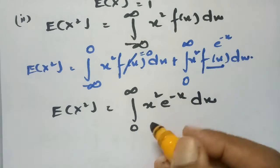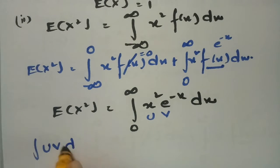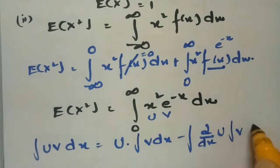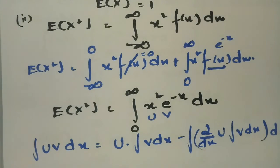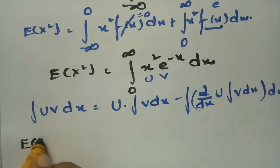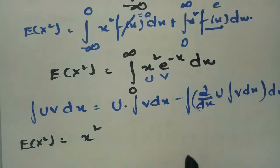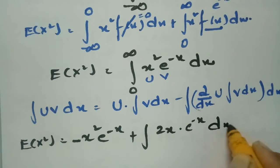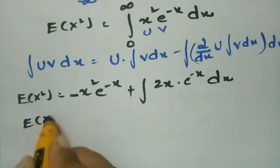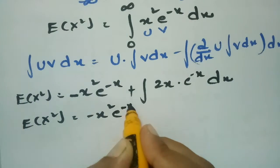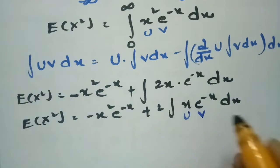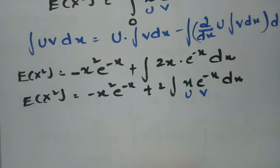Again applying integration by parts with u = x² and v = e^(-x): E(X²) = x²·(-e^(-x)) minus the integral of 2x·(-e^(-x)) dx. This gives minus x²·e^(-x) plus 2 times the integral of x·e^(-x) dx, which requires another application of integration by parts with u = x and v = e^(-x).